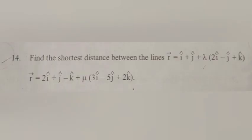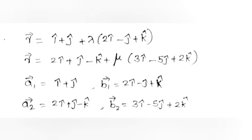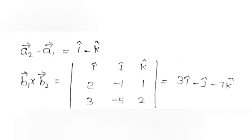Problem 14. Find the shortest distance between the lines r = i + j + λ(2i − j + k) and r = 2i + j − k + μ(3i − 5j + 2k). Here A1 = i + j, B1 = 2i − j + k, A2 = 2i + j − k, B2 = 3i − 5j + 2k. A2 − A1 = i − k.